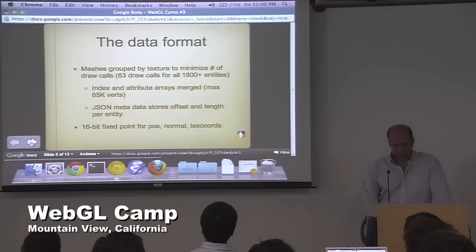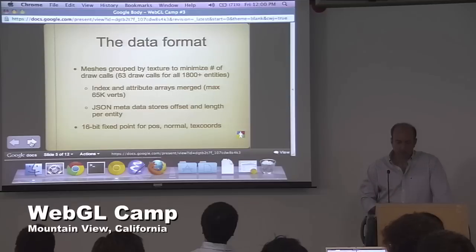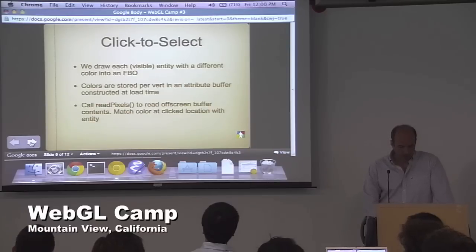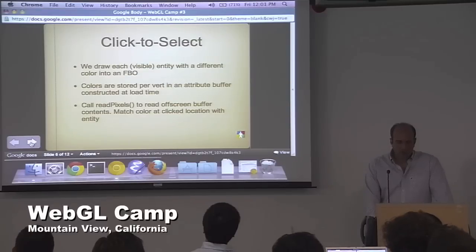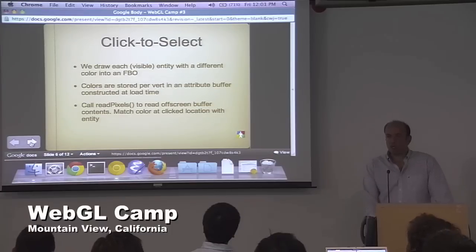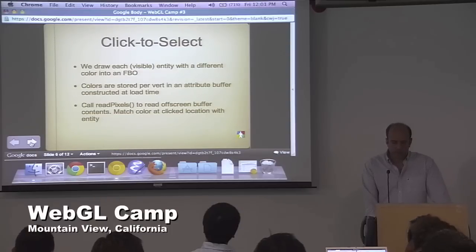We also did some packing — we used 16-bit fixed point for the vertex information. An interesting thing before I switch over to Wang: part of the reason we wanted to identify individual entities is because we wanted the user to be able to click on them. The way we did the click-to-select feature is kind of interesting.